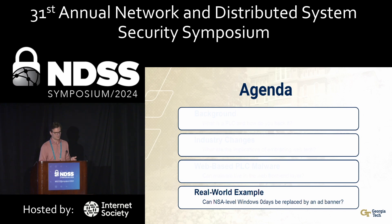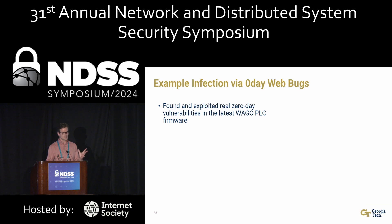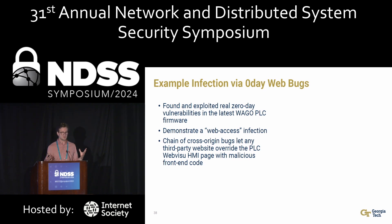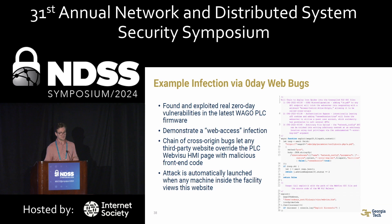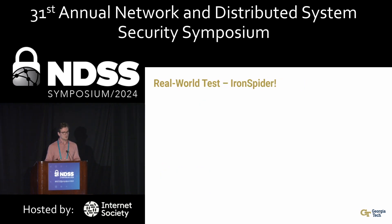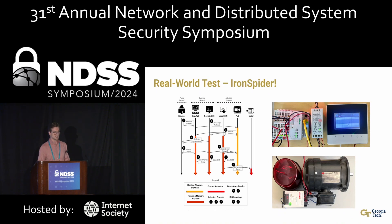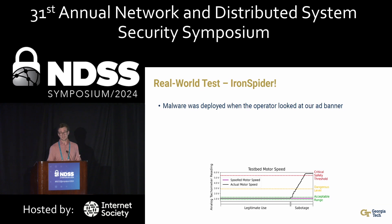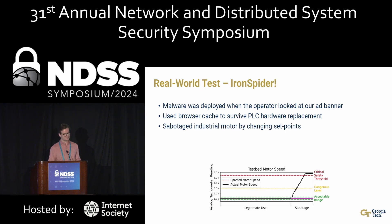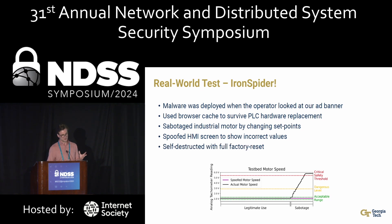For a real-world example, we found and exploited real zero-day bugs in a popular PLC version in our lab to demonstrate what a web access infection looks like. This is a chain of cross-origin web bugs that lets any third-party website override that HMI file with whatever they want. This attack was automatically launched if any machine inside the network visited the malicious web page. We assembled a real-world testbed in our lab with the PLC and HMI actually controlling a full industrial motor with a power supply and emergency light. The results: malware was deployed when the operator just looked at an ad banner. It used browser cache to survive PLC hardware replacement, sabotaged the industrial motor by changing set points, spoofed the HMI screen to show incorrect values, and self-destructed at the end.